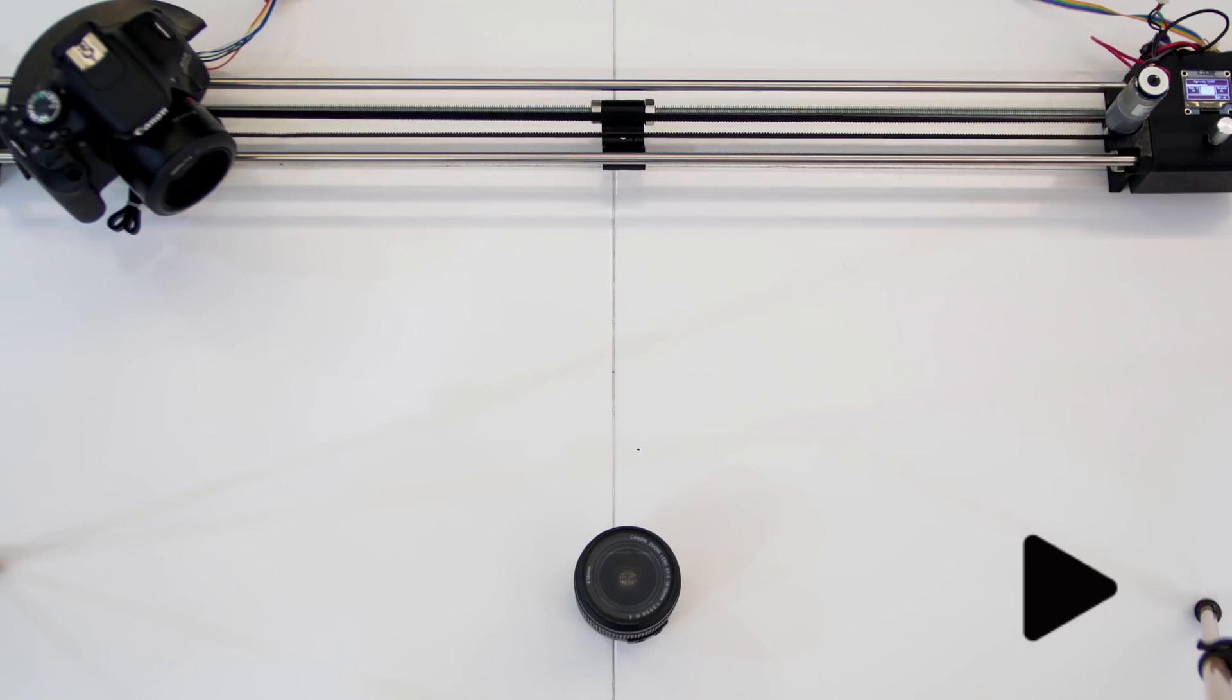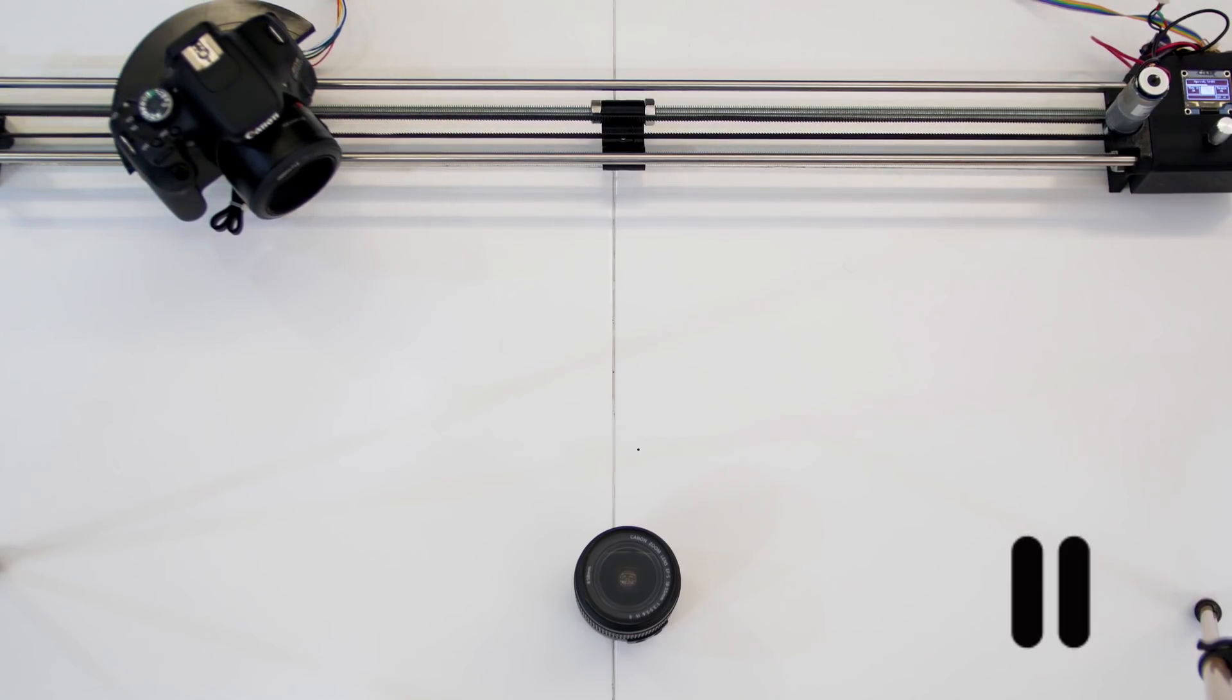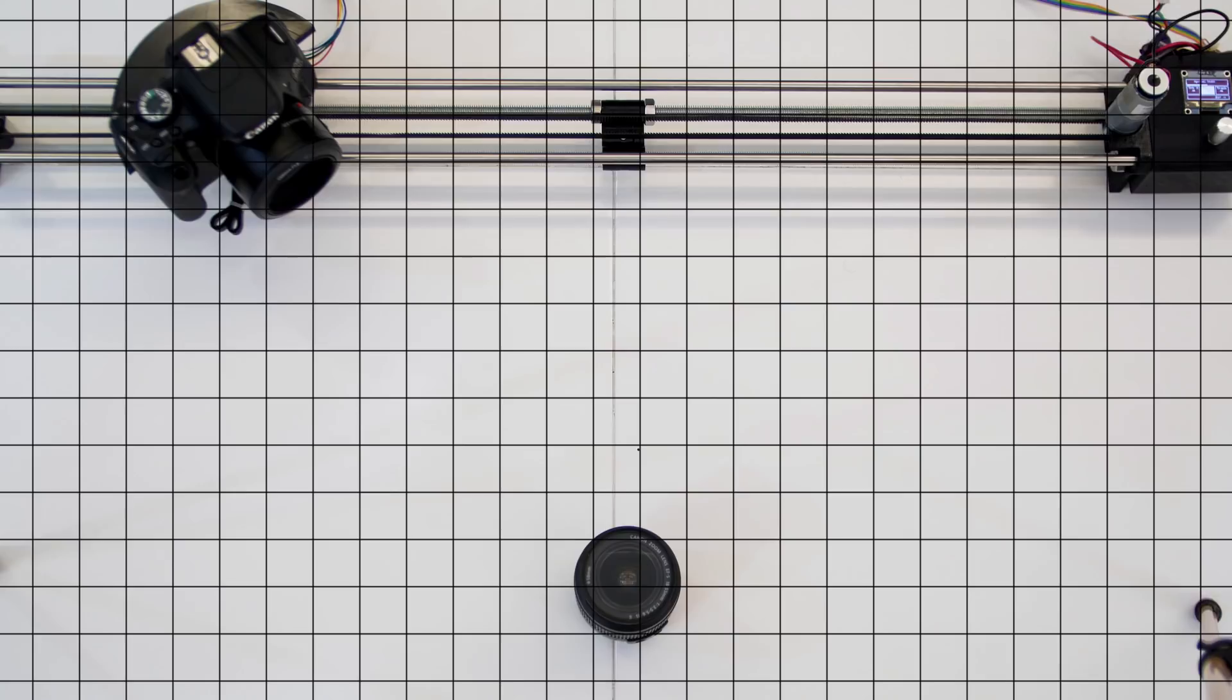Moving on, let's talk about how I programmed the rotational object tracking element of this camera slider. This part is actually incredibly easy to implement. Firstly, you take a two-dimensional grid where you must decide where your object is placed. Again, this can be configured using the menu of the camera slider.